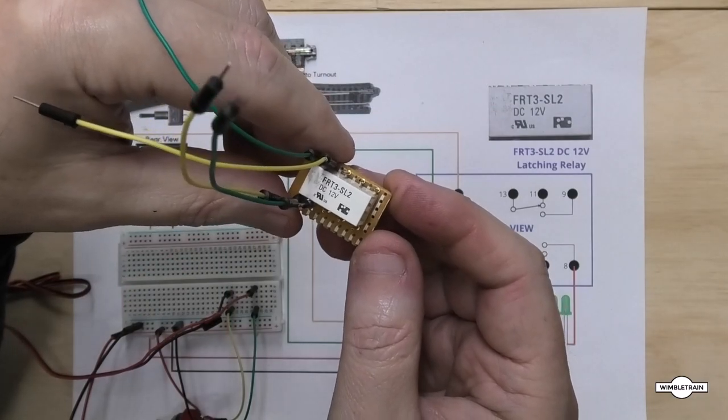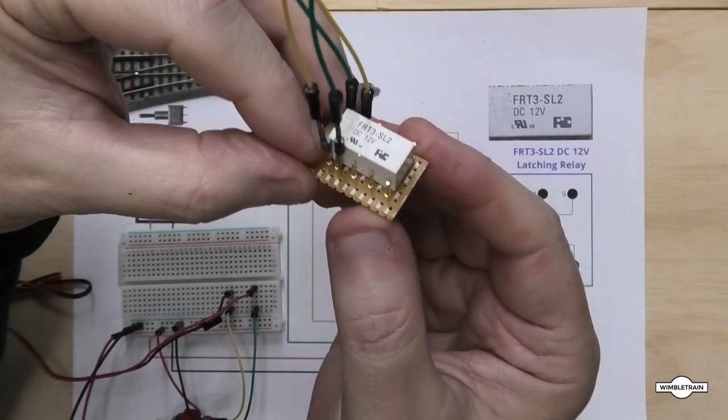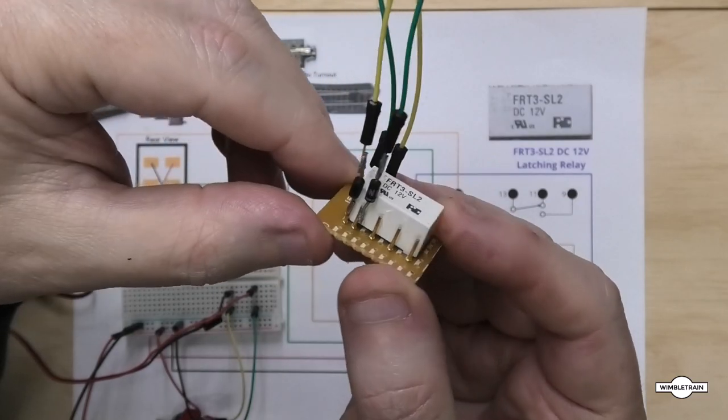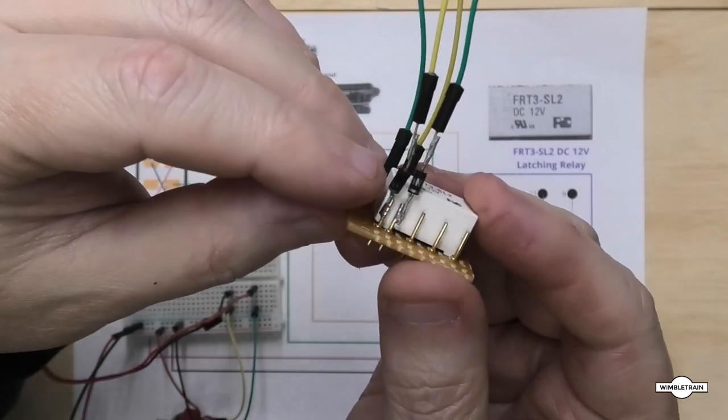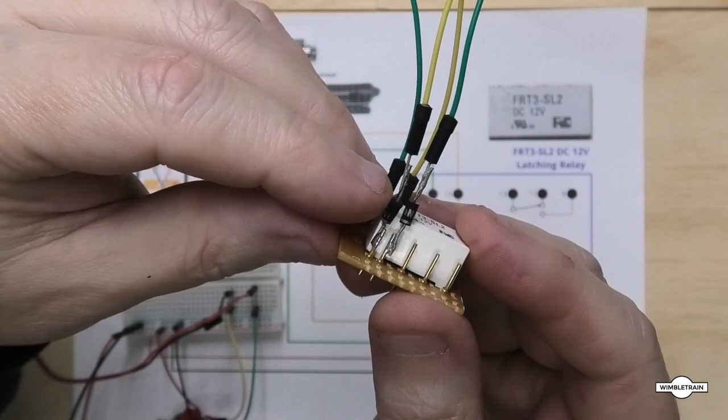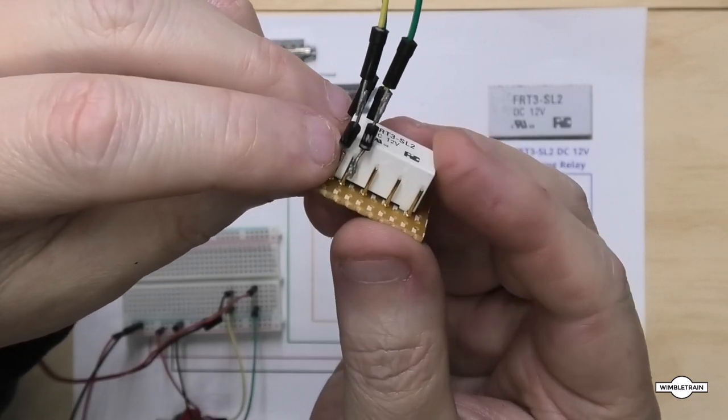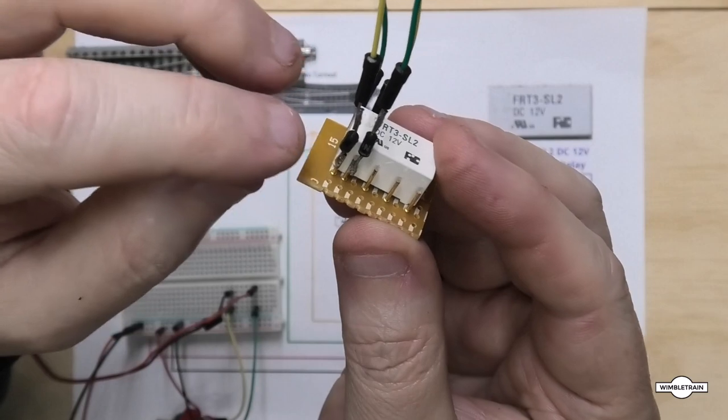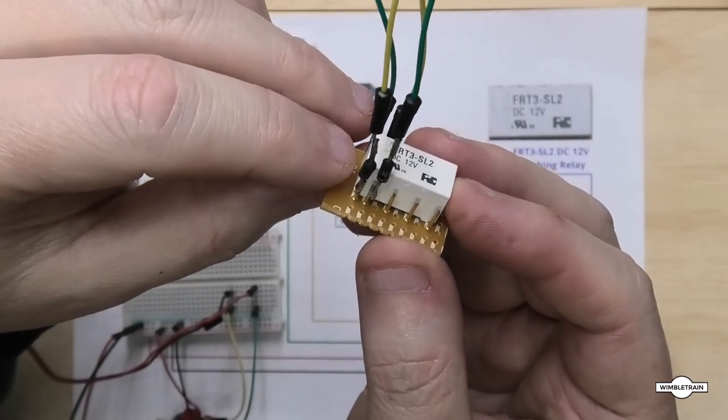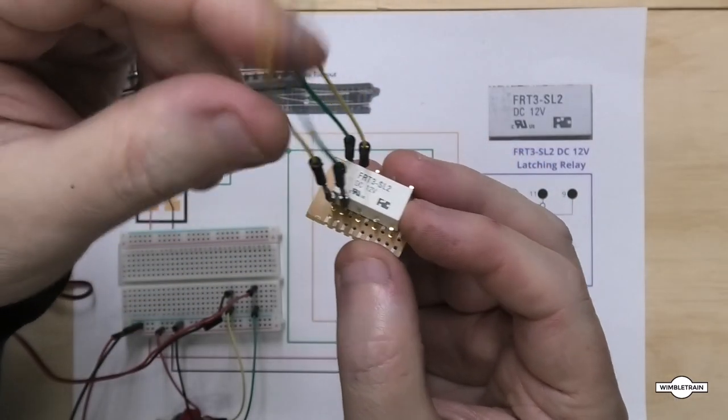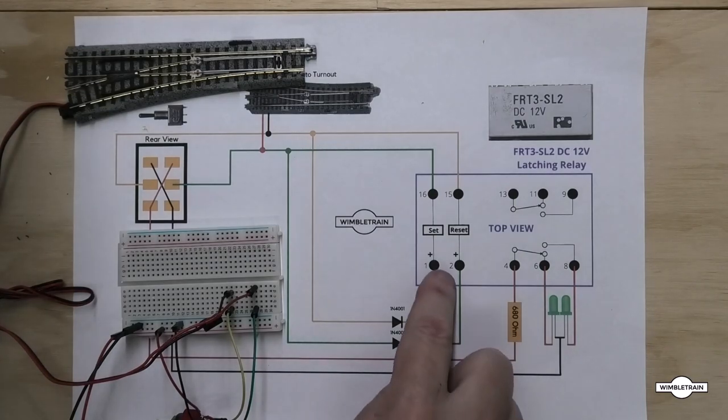So this is a latching relay. Now what I've done is mounted this on a bit of prototyping board and put little pins as you can see there to make it easier to connect up in this example. Now you also notice that I've soldered the diodes onto pins one and two already, with the, hopefully you can see, the stripe in facing down connected to the pins one and two. It's the stripe on the diode that is.